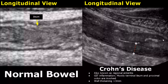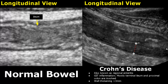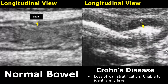Crohn's disease, which is also known as regional enteritis, is a GIT inflammation that mostly affects the terminal ileum and proximal colon. These images are of the ileum, and here we can see thick bowel walls — the thickness is greater than three millimeters. The loss of wall stratification will also be seen; we are unable to identify any layer of the bowel. This hyperechoic structure is gas, and there is some shadowing as well.